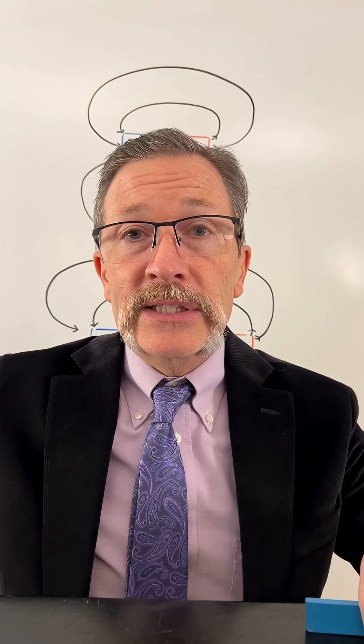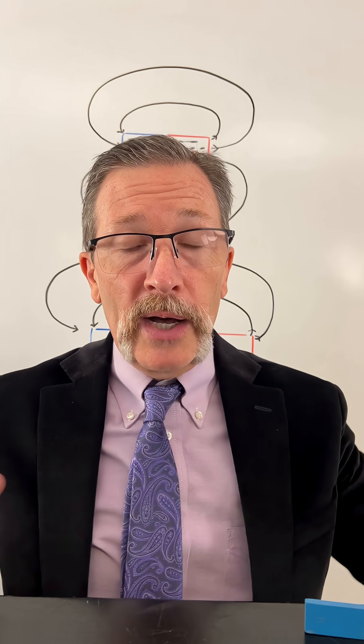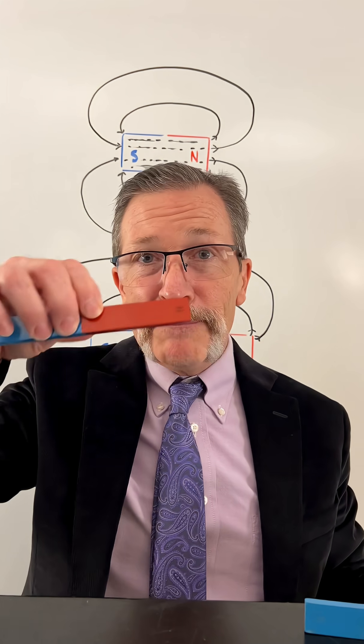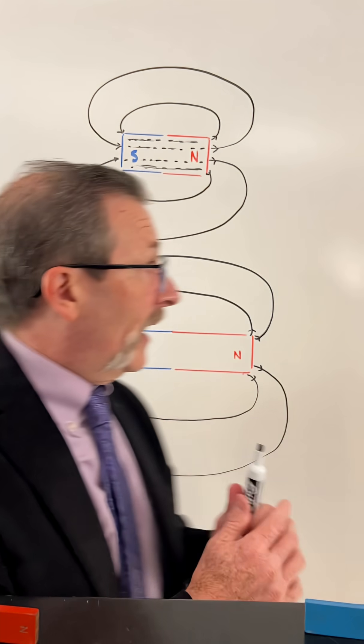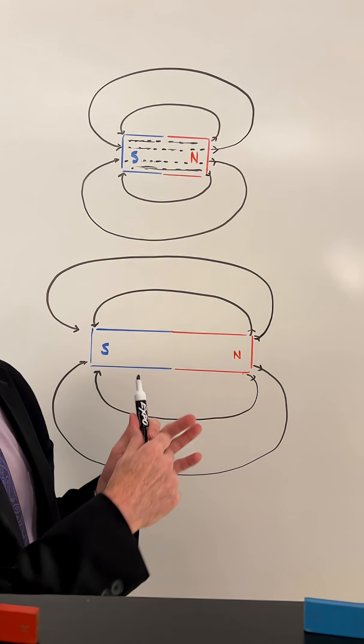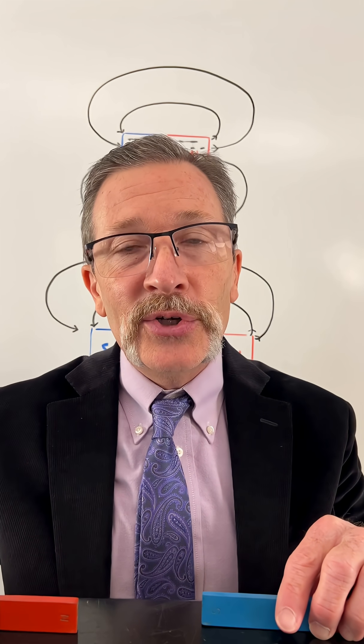And that lets us know, according to this domain model, that anytime you break a magnet, you're always going to end up having a north and south again. All right. That's your quiz for today.